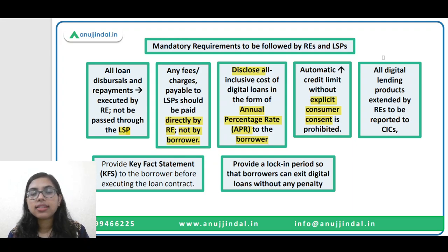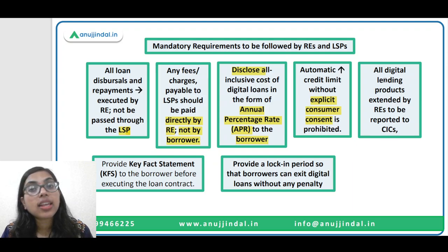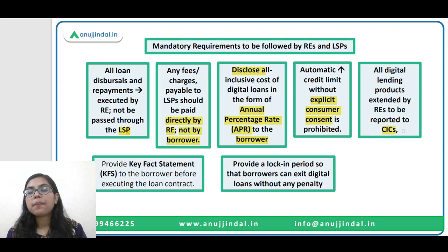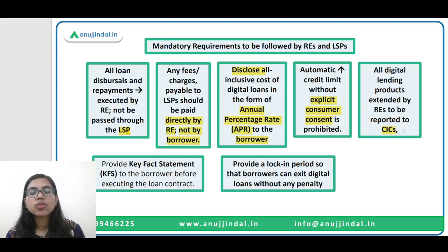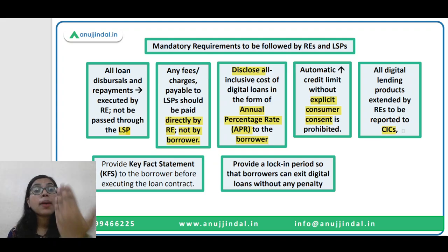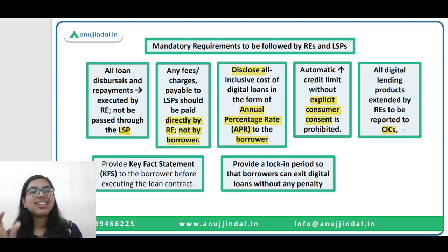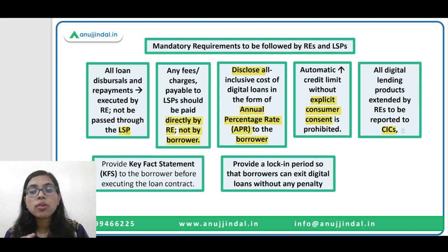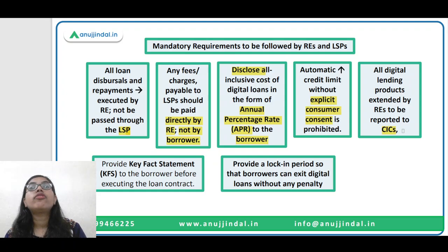The next requirement is that all digital lending products extended by regulated entities should be reported to credit information companies - the credit bureaus such as CIBIL and Equifax. These institutions provide us with a credit score by analyzing all loan transactions, deposit movements, and overall account balance. Based on this data, our credit score is calculated. RBI has mandated that for all lending products, be it new or old, whenever any lending product is executed, it needs to be reported first to the credit information companies.